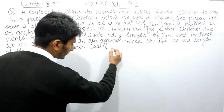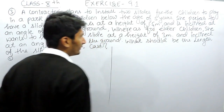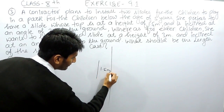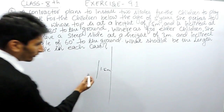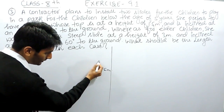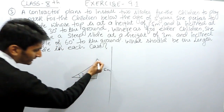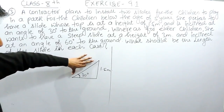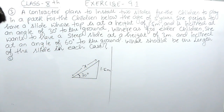In the first case, she wants to install a slide such that it is 1.5 meters high from the ground. If this is the ground, the height should be 1.5 meters and the slide should be inclined at an angle of 30 degrees with the ground. We have to find the length of this slide, which is X.